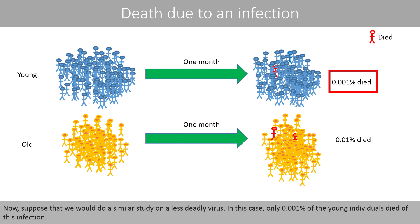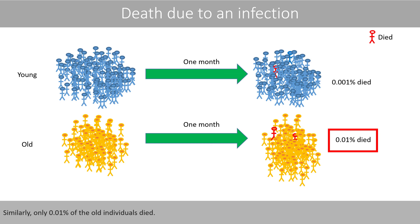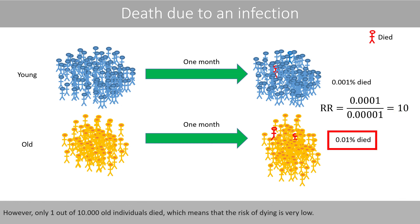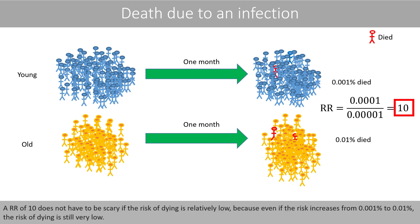Now, suppose that we would do a similar study on a less deadly virus. In this case, only 0.001% of the young individuals died of this infection. Similarly, only 0.01% of the old individuals died. The relative risk is here 10, which might sound a bit scary if you are an old person, because you are then 10 times more likely to die of the infection. However, only 1 out of 10,000 old individuals died, which means that the risk of dying is very low. A relative risk of 10 does not have to be scary if the risk of dying is very low, because even if the risk increases from 0.001% to 0.01%, the risk of dying is still very low.